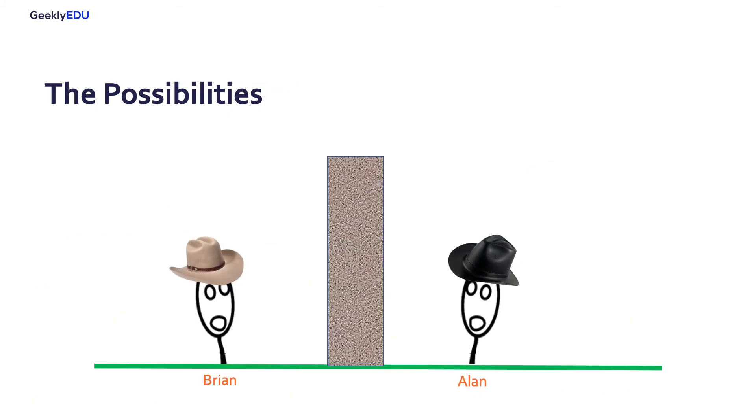Let's take a look into the possibilities. For Brian and Alan, there's nothing they can do, because they only see the wall in front of them, so they have no clue about the hats.